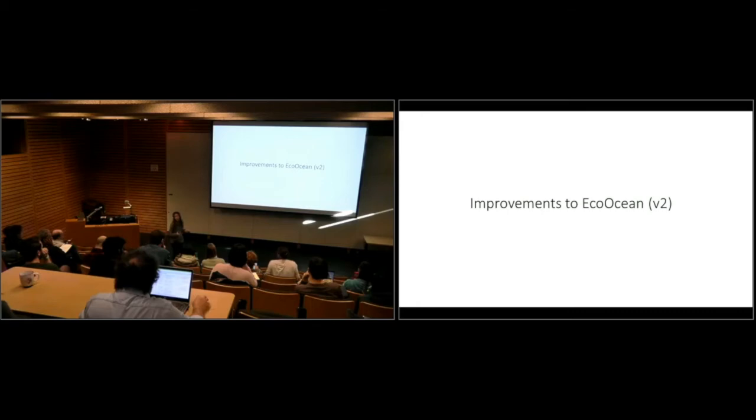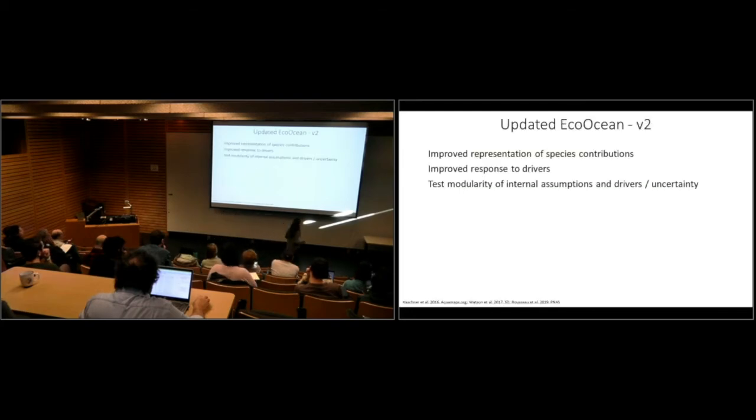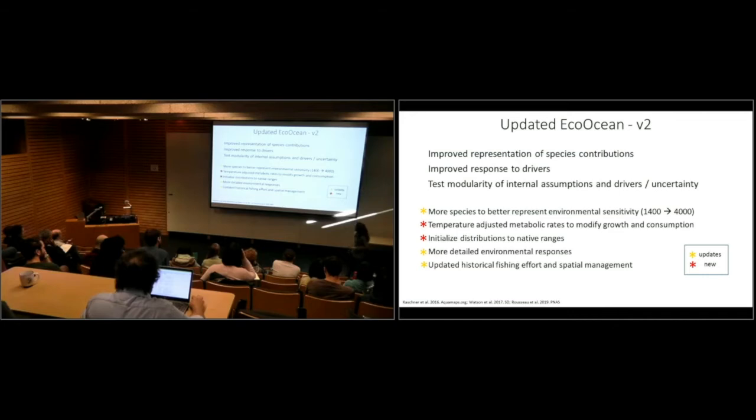In 2018, we said okay, we want to do better with EcoOcean. We learned a lot and want to improve it. So what we did - this is where things are out of the oven. We improved representation of marine species. We included responses to drivers, especially temperature. We're interested in investigating model sensitivity in terms of assumptions.